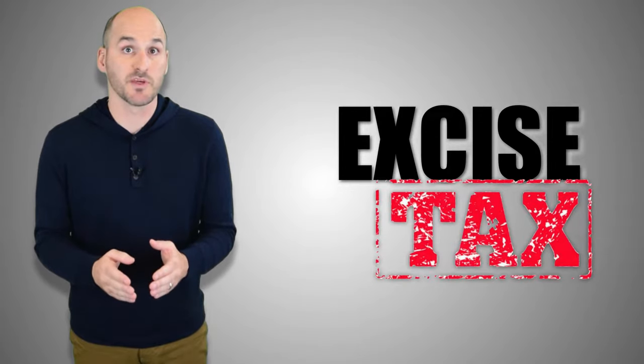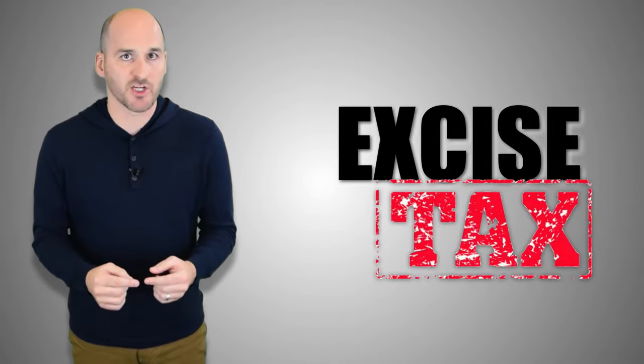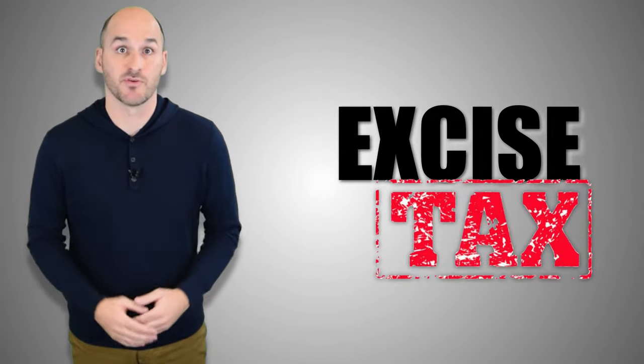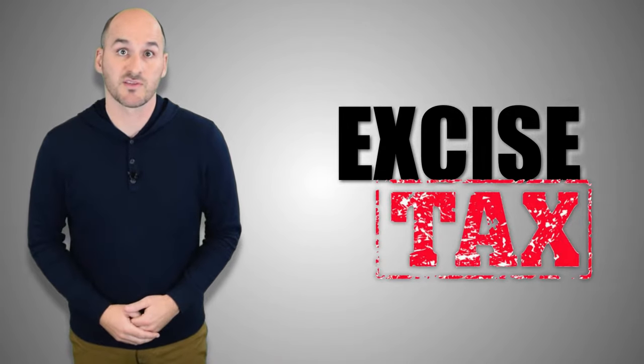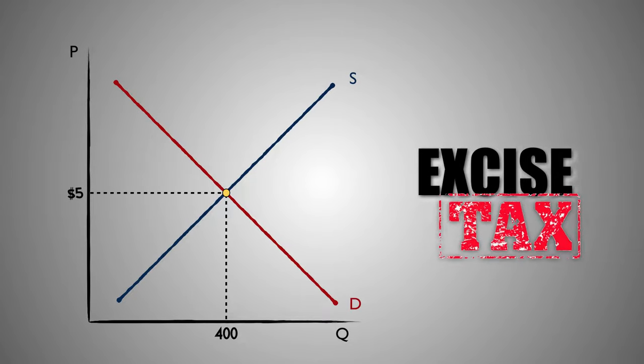The goal of an excise tax is to minimize social cost or negative externalities associated with the production of a good. Excise taxes may also be used in order to decrease the production of a good that may be overproduced. Here's how it works. Supply and demand in the market for Good C has established an equilibrium price of $5 and an equilibrium output of 400 units. However, the production of Good C creates negative externalities for society, and the government wants to reduce the harmful effects of Good C by limiting the output and making Good C more expensive for consumers.